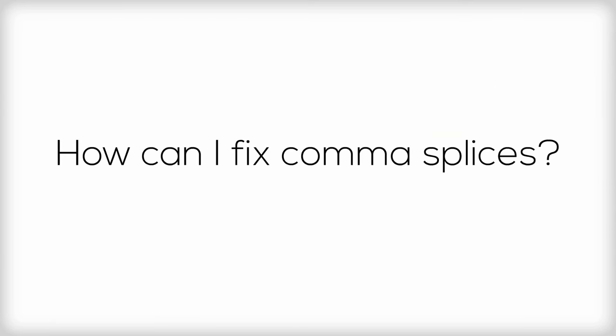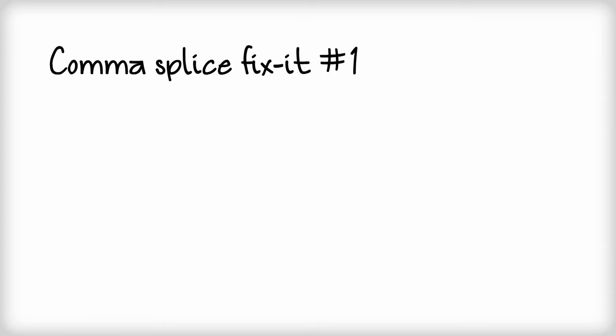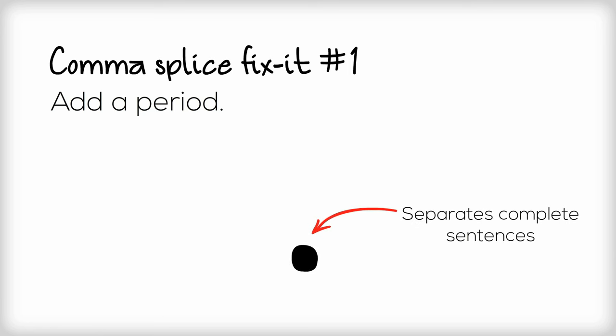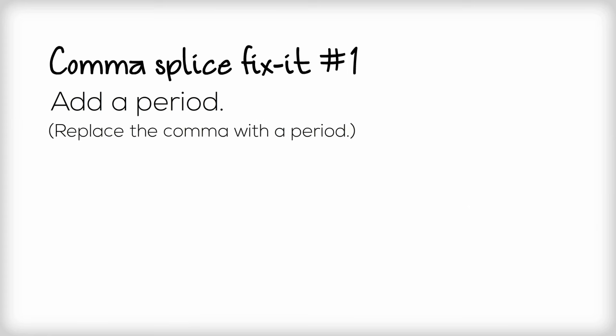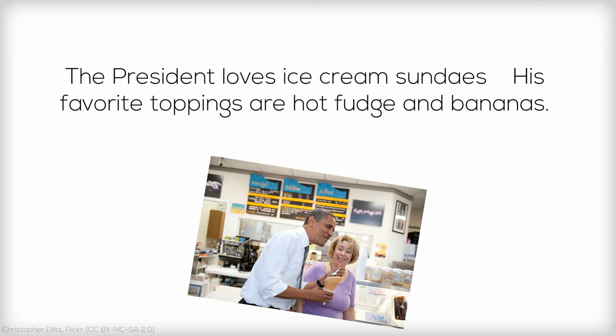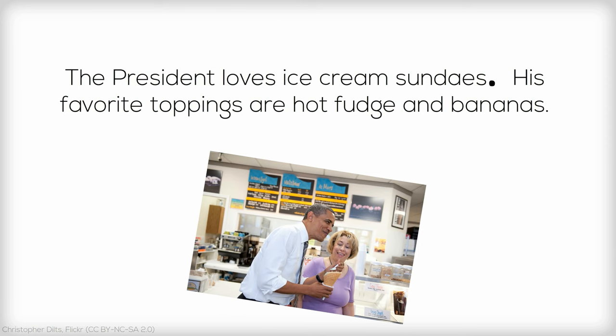So, how can you fix this sentence? You have a few options. Comma splice fix number one: Add a period. As you probably know, a period is used to separate complete sentences. A quick comma splice fix is to replace the comma with a period. Our example would then read as, The president loves ice cream sundaes. His favorite toppings are hot fudge and bananas. Easy peasy. The comma splice is fixed.